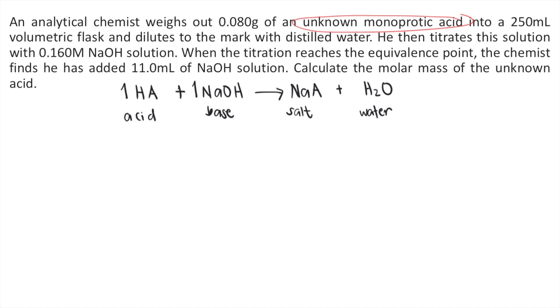Now let's focus on the numbers. At the equivalence point, the chemist has added 11.0 mL of NaOH solution. First, we need to convert mL into liters using dimensional analysis. For every one liter, there are 1000 mL. The mLs cancel out, and now we have liters of NaOH.